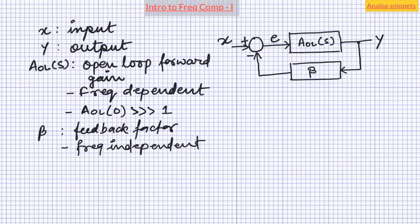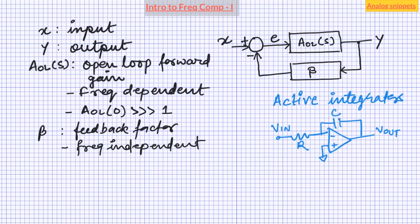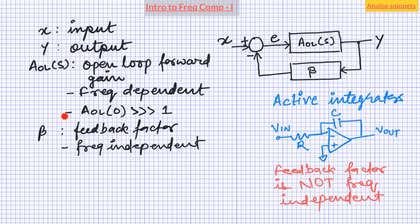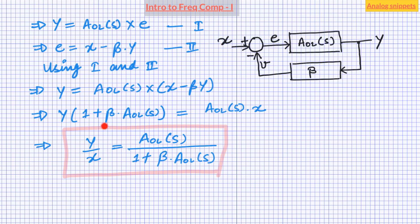One such obvious example is an active integrator circuit, where the feedback network is made of a capacitor and resistor, which is obviously frequency dependent. Coming back to our frequency independent beta, its value is between 0 and 1. This circle here is a summer element and the minus sign is what makes this feedback negative. Assuming forward gain and feedback factor to be unidirectional, we can easily calculate the transfer function of this system. By using simple algebra, we arrive at the desired transfer function equation.